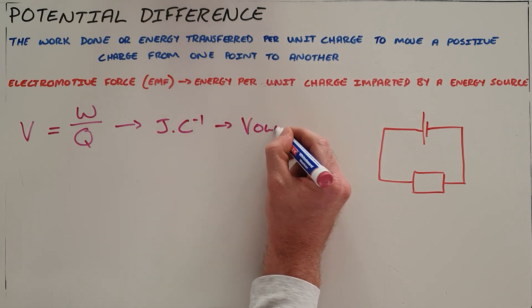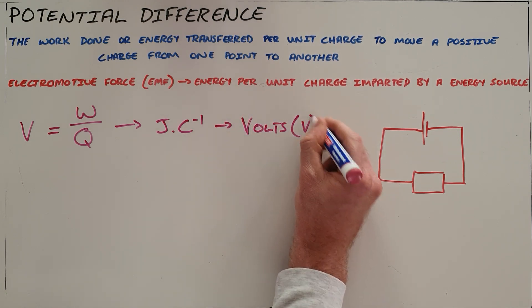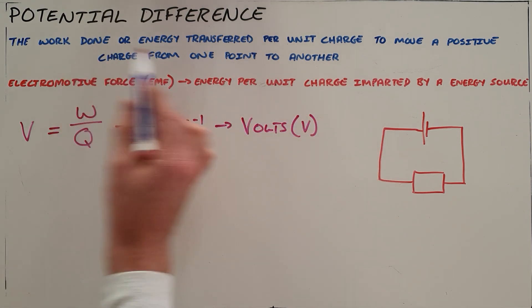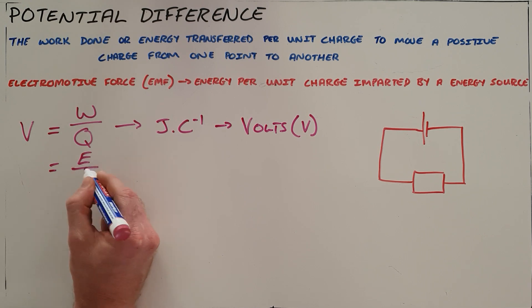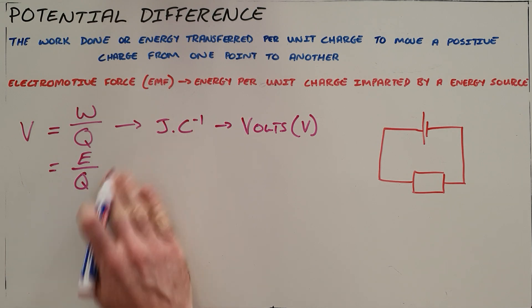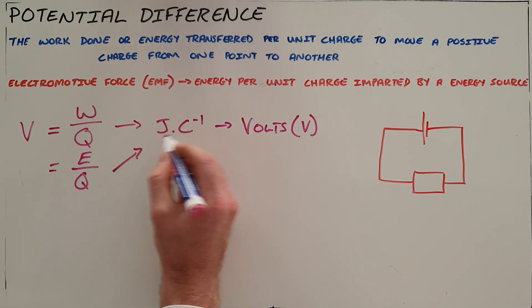Note here that work done and energy transferred are interchangeable in this case, so the formula can either be W over Q or also E over Q, but both of them still give rise to joules per coulomb, which is measured in volts.